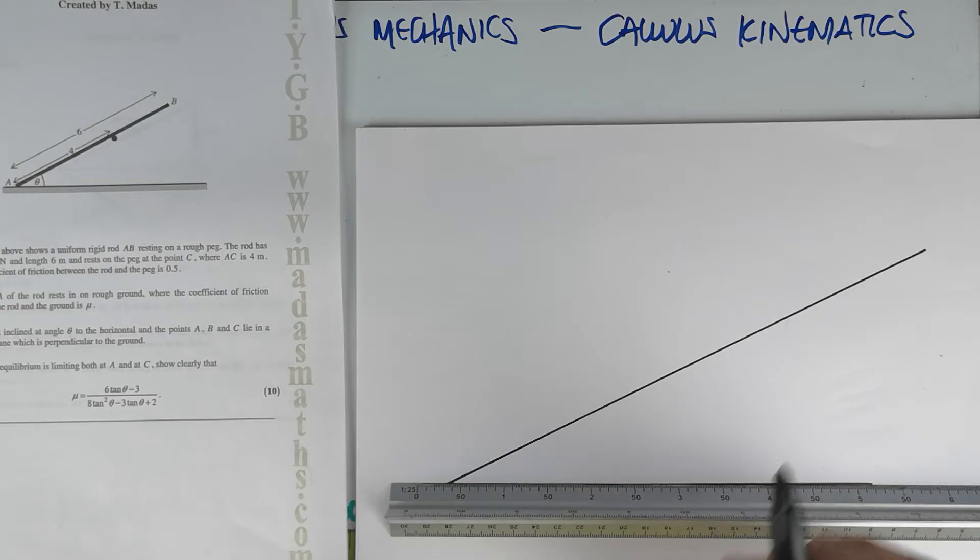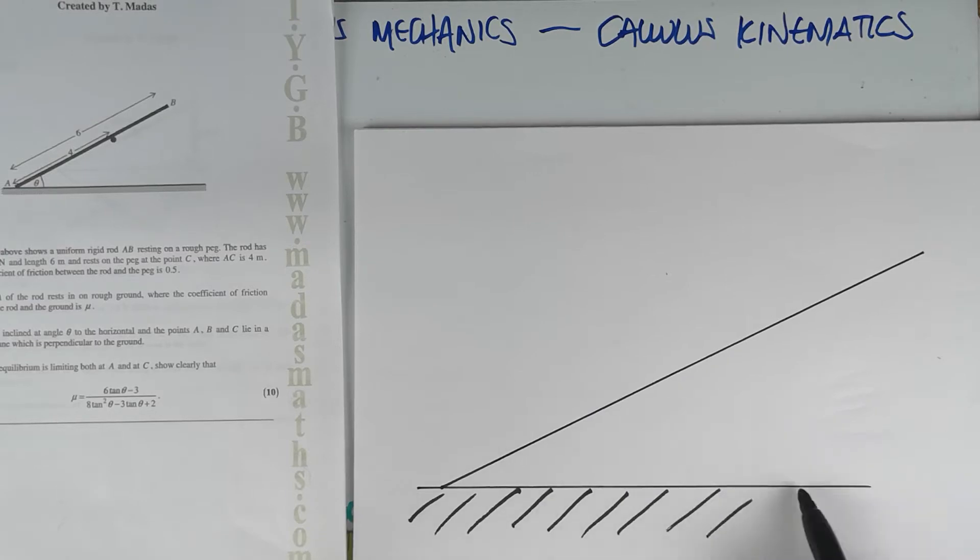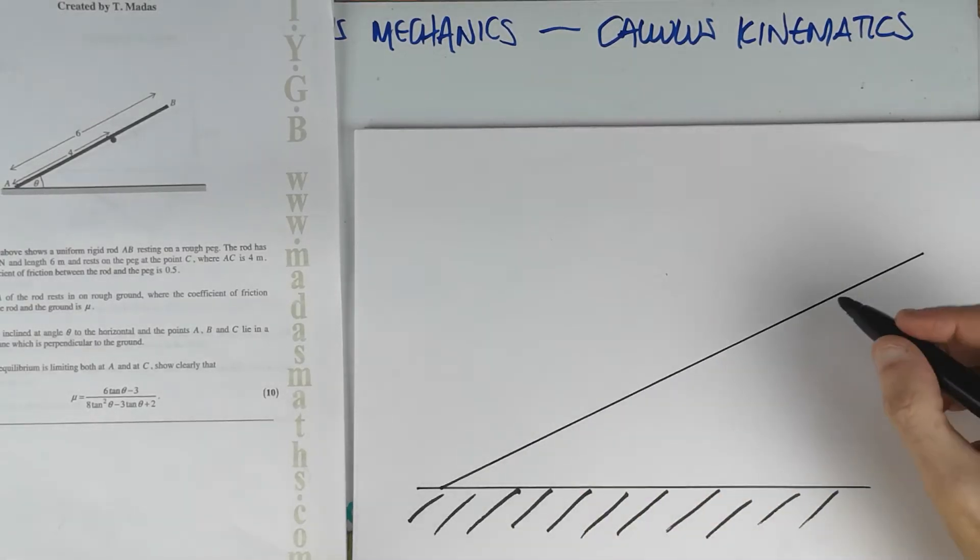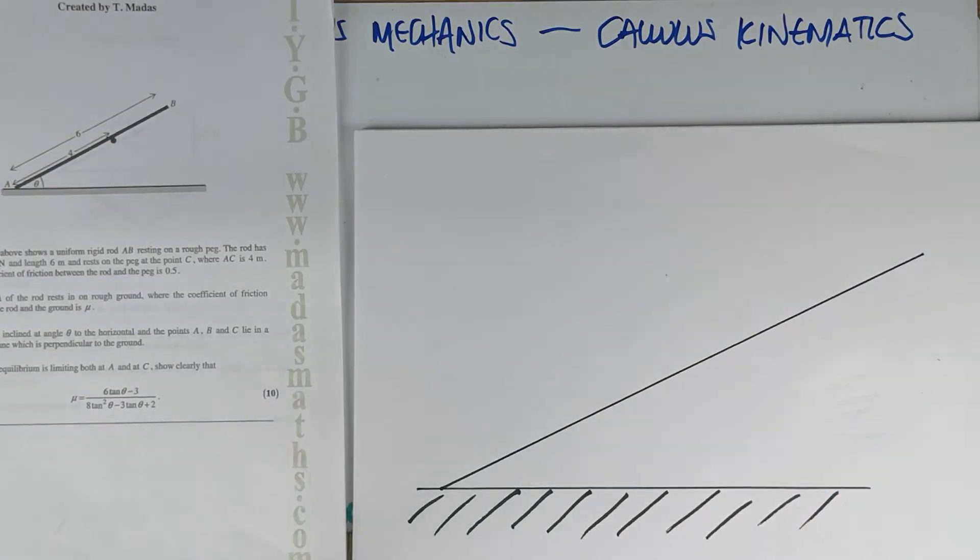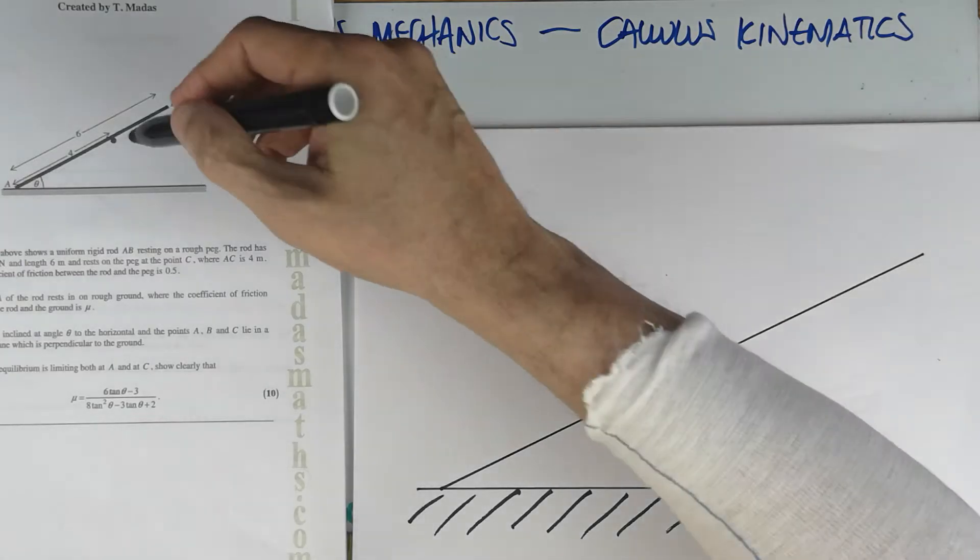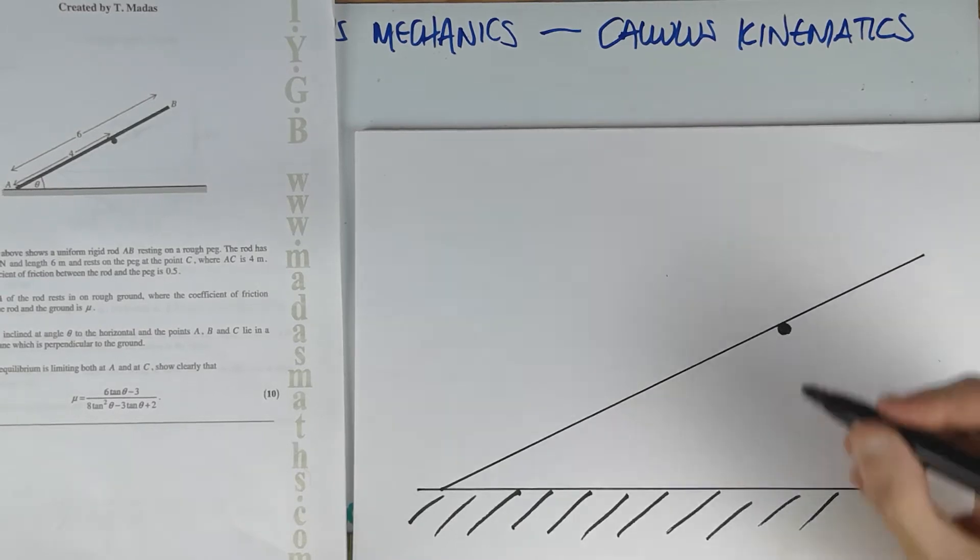Another thing which goes wrong in mechanics is people doing diagrams that will fit into the back of a postage stamp, which is quite irritating. The figure above shows a uniform rigid rod AB. There's my rod. Quite large as you can see. And this is the ground.